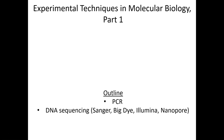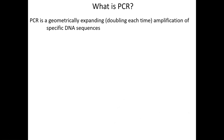We'll talk about different strategies for sequencing DNA — determining the sequence of a DNA region — including standard Sanger sequencing, often referred to as first-generation sequencing, big-dye sequencing which is a derivative of Sanger, Illumina or second-gen sequencing, and nanopore sequencing or third-gen. We'll also talk about assays used in the lab to determine the position of nucleosomes. For those who haven't heard of PCR before, PCR is probably one of the most transformational experimental techniques to come out of the molecular biology revolution.